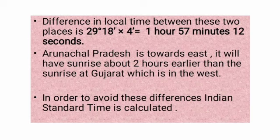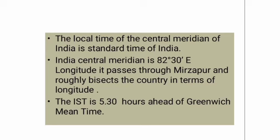Since Arunachal Pradesh is towards the east, it will have a sunrise about 2 hours earlier than the sunrise at Gujarat, which is in the west. In order to avoid these differences, Indian Standard Time is calculated. The local time of the Central Meridian of India is the Standard Time of India. India's Central Meridian is 82°30' east longitude, and it passes through Mirzapur, roughly bisecting the country in terms of longitude.